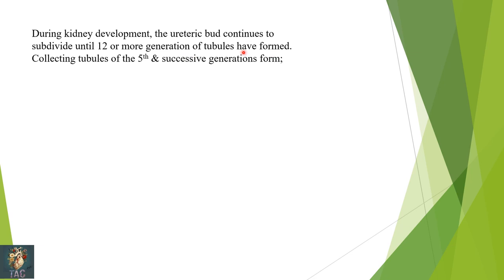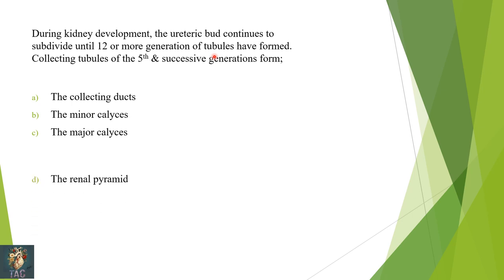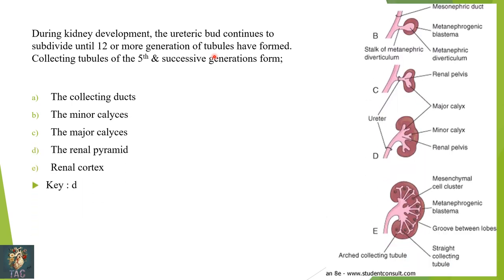Next: during kidney development, the ureteric buds continue to subdivide until 12 or more generations of tubules have formed. The collecting tubules of the fifth and successive generations will form — collecting duct, minor calyces, major calyces, renal pyramids, or renal cortex? The first and second generations absorb, third and fourth form the minor and major calyces, and the fifth generation and successive generations form the renal pyramids. So the correct option is renal pyramids.